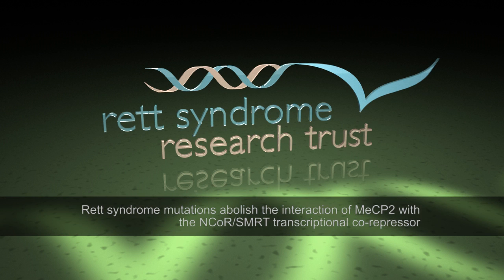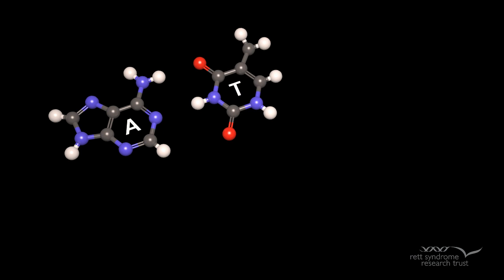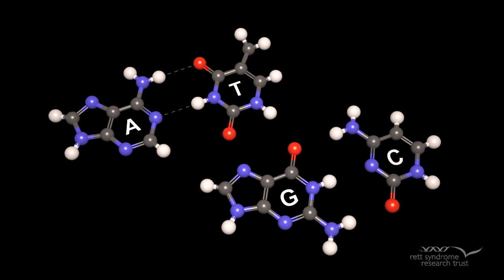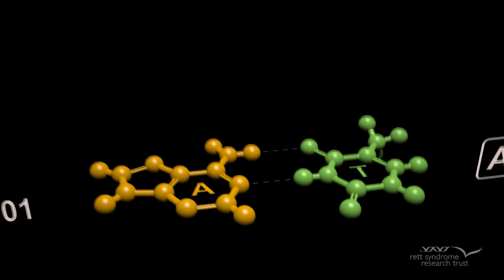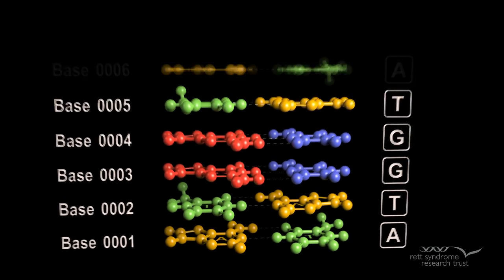Rett syndrome is a debilitating neurological condition caused by mutations in a gene called MeCP2. Genes are made up of DNA, which is made up of bases called A, T, G, and C. A always pairs with T, and G always pairs with C. This order spells out the exact instructions required to create a particular organism with its own unique traits.